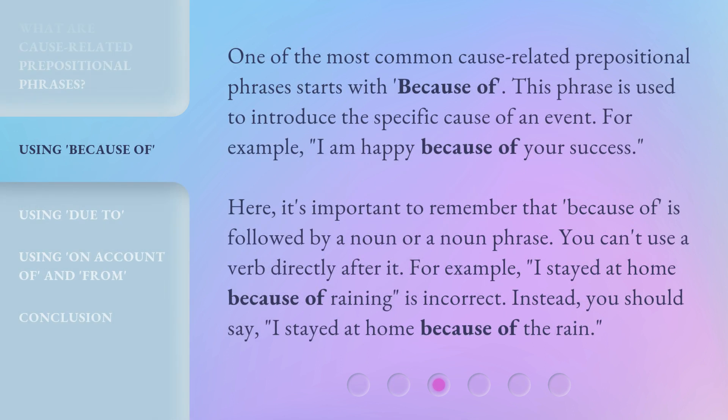One of the most common cause-related prepositional phrases starts with 'because of.' This phrase is used to introduce the specific cause of an event. For example: 'I am happy because of your success.' It's important to remember that 'because of' is followed by a noun or a noun phrase — you can't use a verb directly after it. For example, 'I stayed at home because of raining' is incorrect. Instead, you should say, 'I stayed at home because of the rain.'